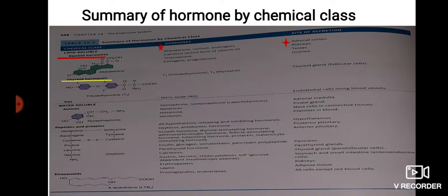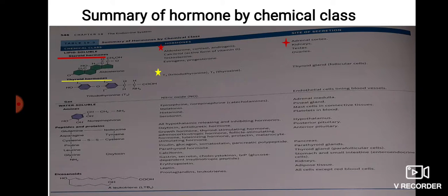Thyroid hormones T3 and T4 are formed by attaching iodine to the amino acid tyrosine. These are secreted by the follicular cells of the thyroid gland. The gas hormone nitric oxide is secreted by the endothelium cells lining the blood vessels.